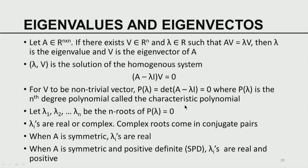An nth-degree polynomial has n roots. Let lambda₁, lambda₂, ..., lambda_n be the n roots of P(lambda) = 0. From the fundamental theorem of algebra, we know that the lambdas can be either real or complex. Complex roots always come in conjugate pairs. The reason complex roots come in conjugate pairs is that the elements of matrix A are real, which implies the coefficients of P(lambda) are real. When solving a polynomial with real coefficients, any complex root must be a complex conjugate.